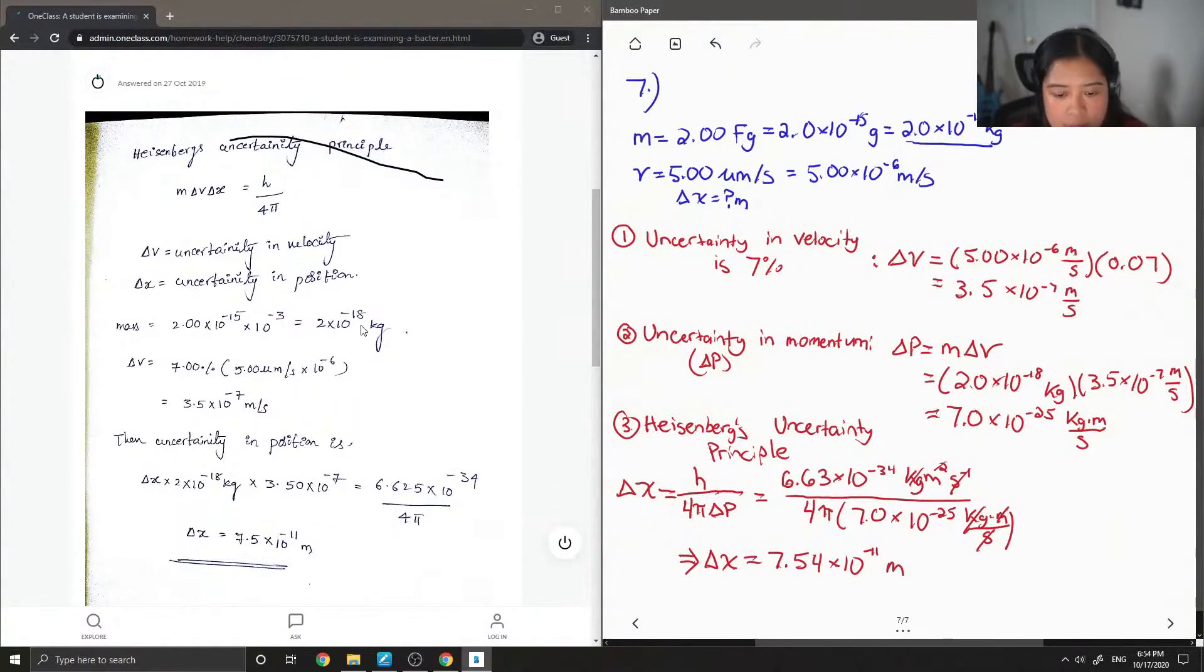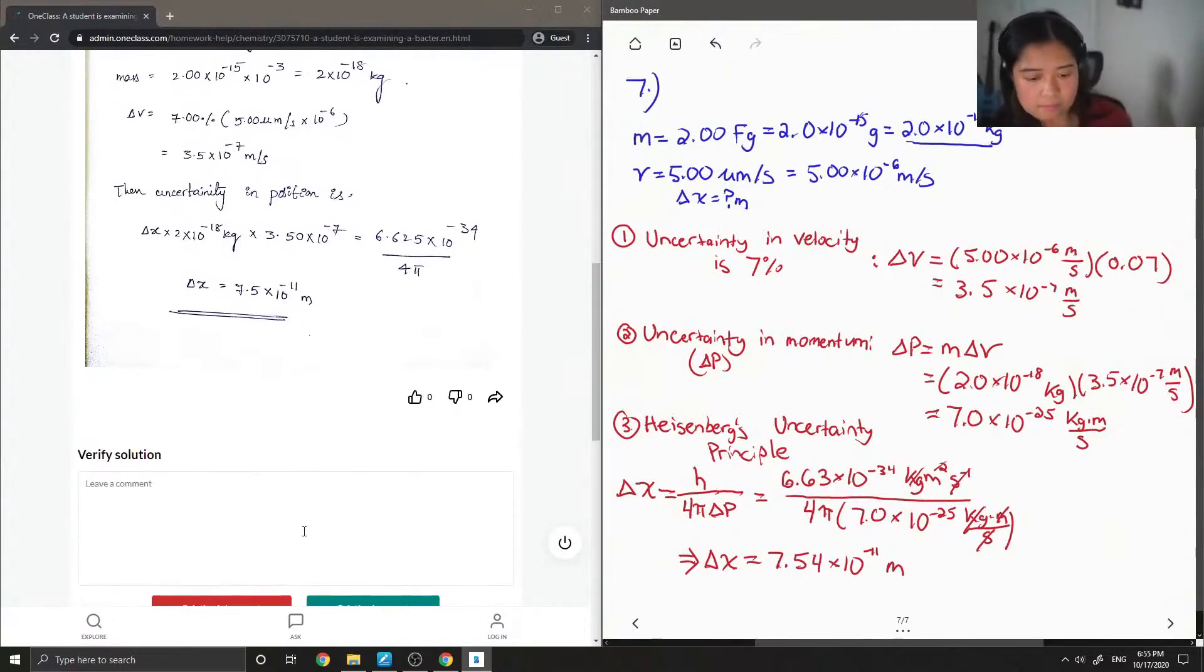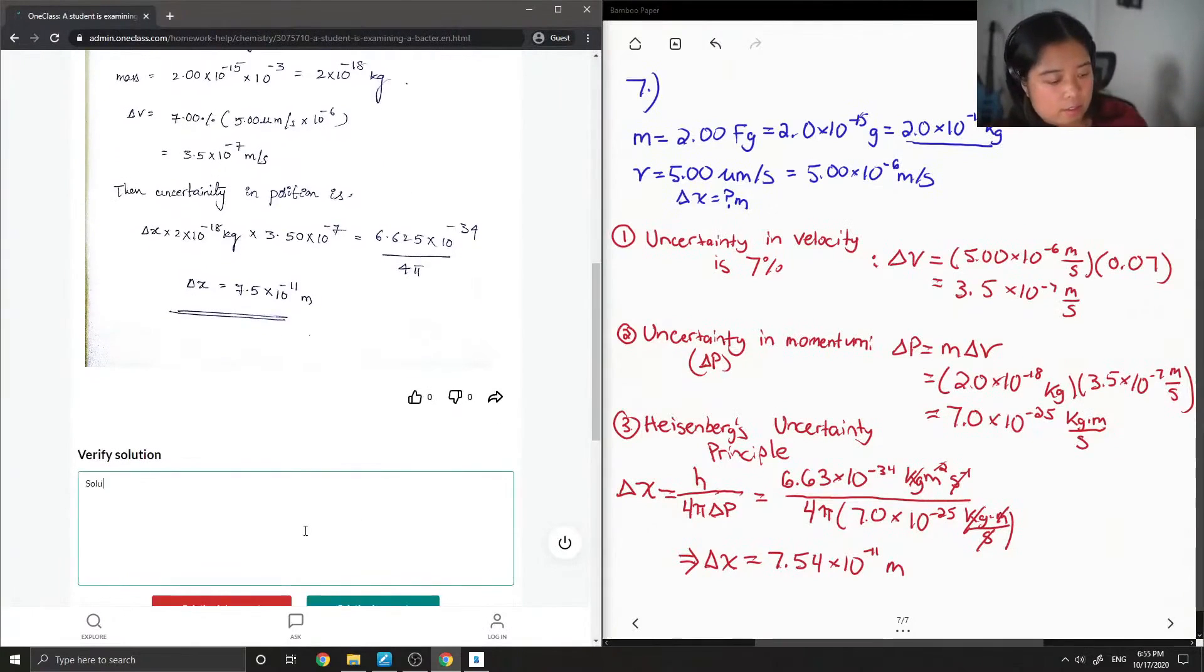They have the mass converted to kilograms, delta v multiplying that by the 7%, and then plugging it into the final equation to get 7.5 times 10 to the negative 11. So this solution is correct.